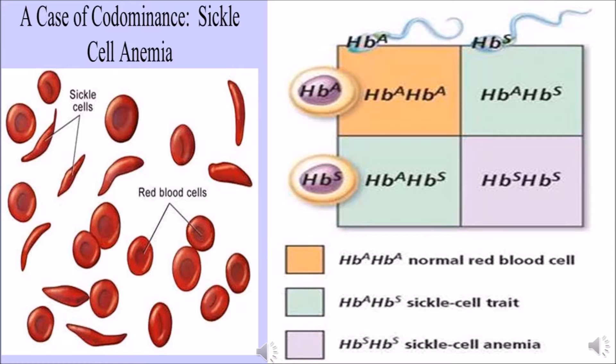The carrier heterozygous individuals are phenotypically healthy and normal, but they have both types of blood cells. The remaining 25% are sickle cell anemia homozygous (HbS HbS). This type of homozygous children die in childhood due to acute anemia.